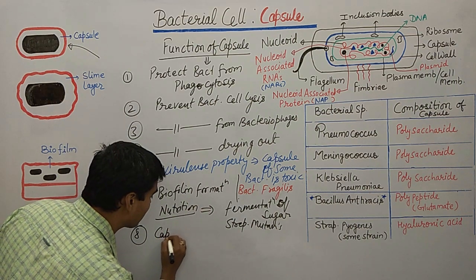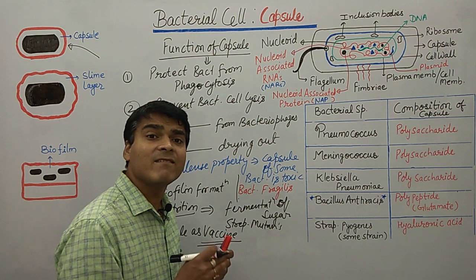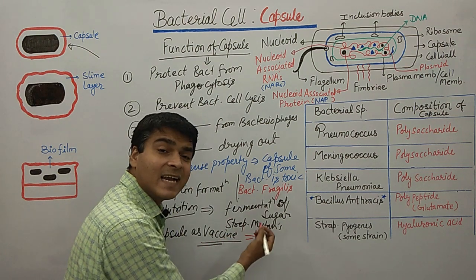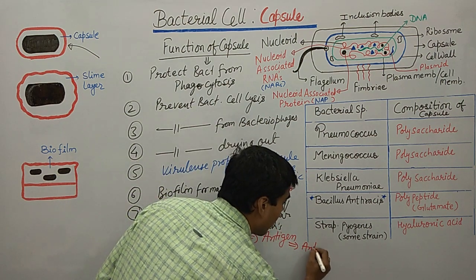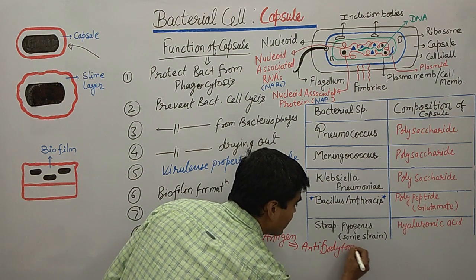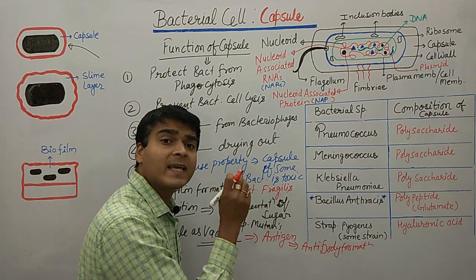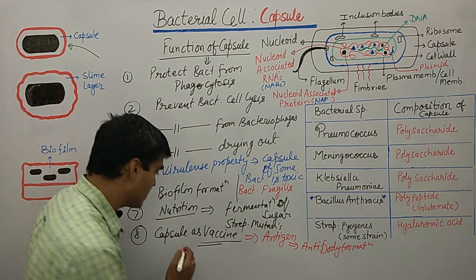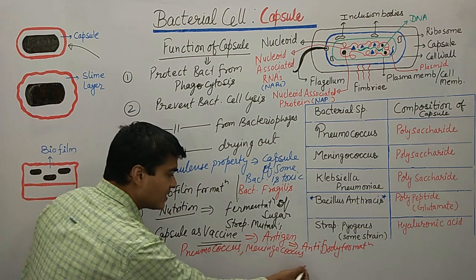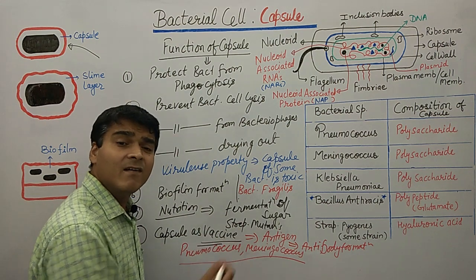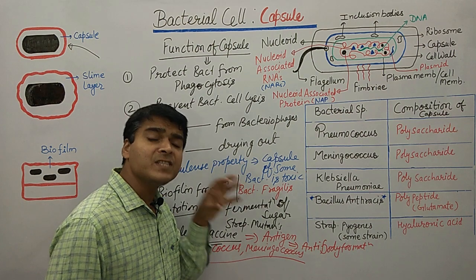Another function of the capsule is it can work as a vaccine. The outermost area of the capsule is a toxic material that can act as an antigen. Due to this antigen, antibody formation is possible, which leads to the possibility of vaccine formation. Examples of bacteria whose capsules are used as vaccines are Pneumococcus and Meningococcus.